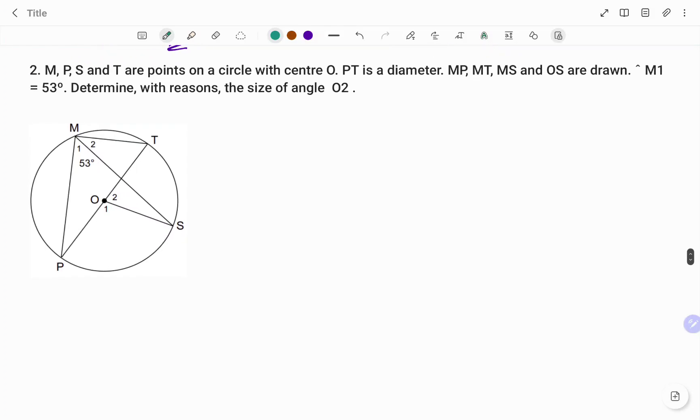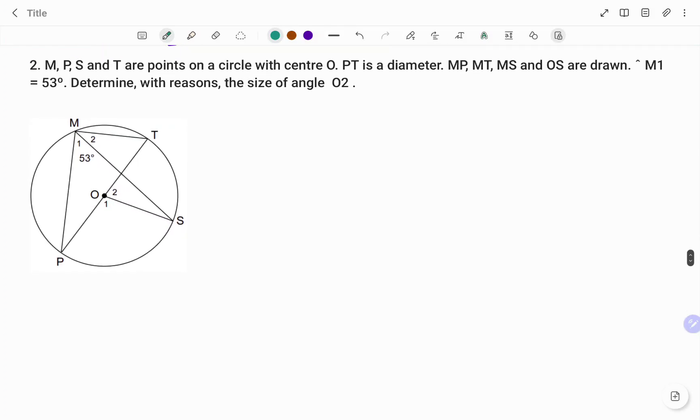We have M, P, S, and T, a point on a circle with center O. The line PT is the diameter. MP, MT, MS, and OS are drawn. Angle M1 is equal to 53 degrees, as shown in the diagram. We have to determine with reason the size of angle O2.